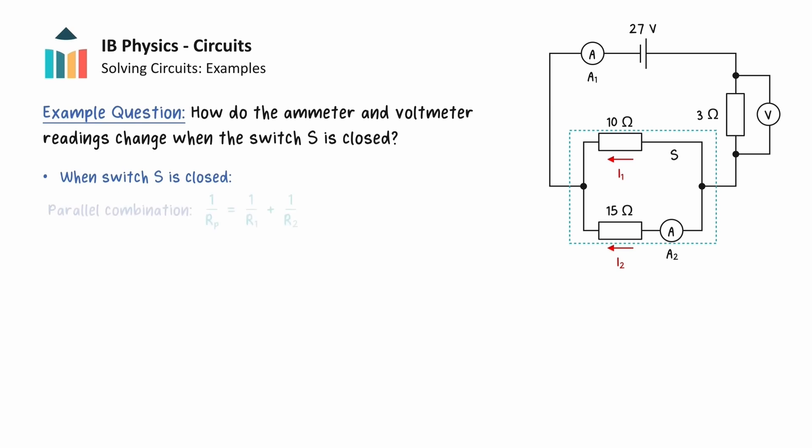We can recall this expression to calculate the equivalent resistance of two resistors in parallel. Substituting the values of 10 ohms and 15 ohms and rearranging, these two resistors in parallel have an equivalent resistance of 6 ohms.